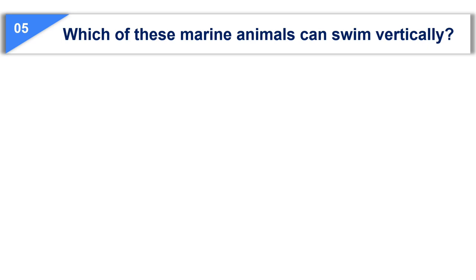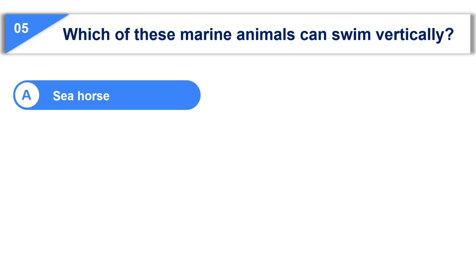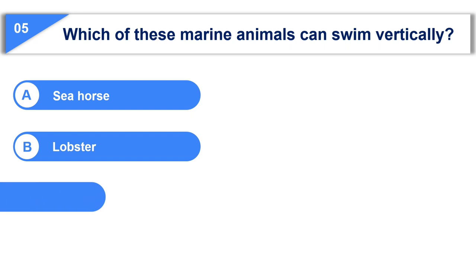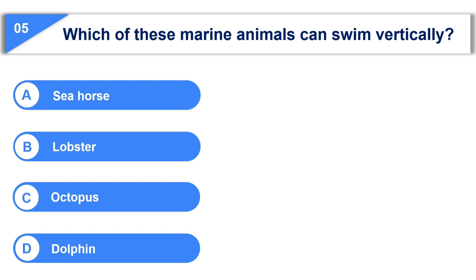which of these marine animals can swim vertically? Option A, seahorse. Option B, lobster. Option C, octopus. Option D, dolphin.